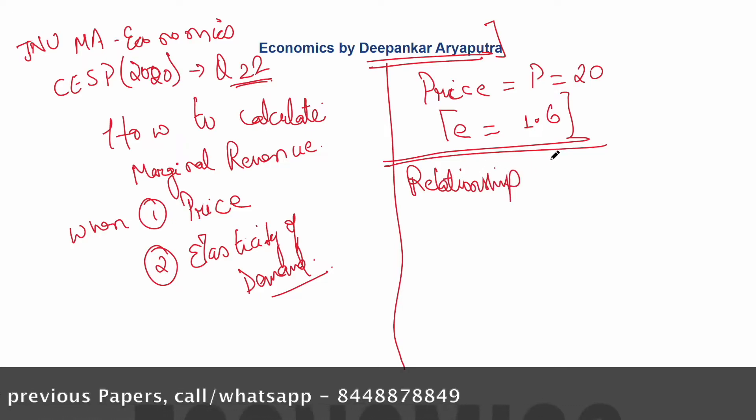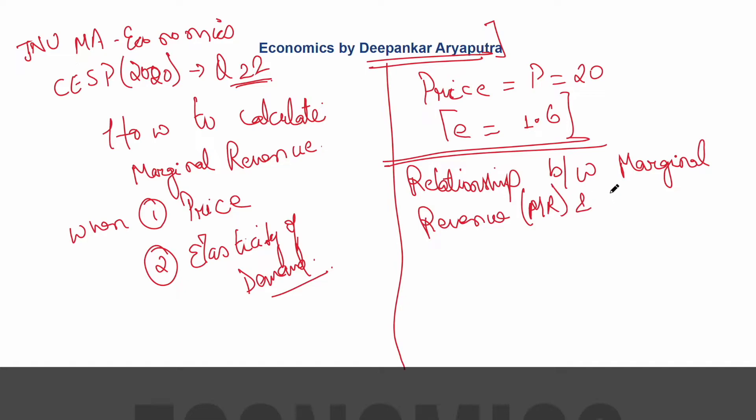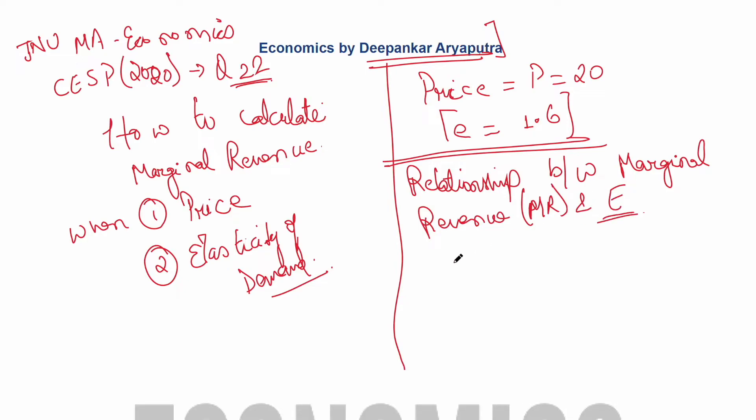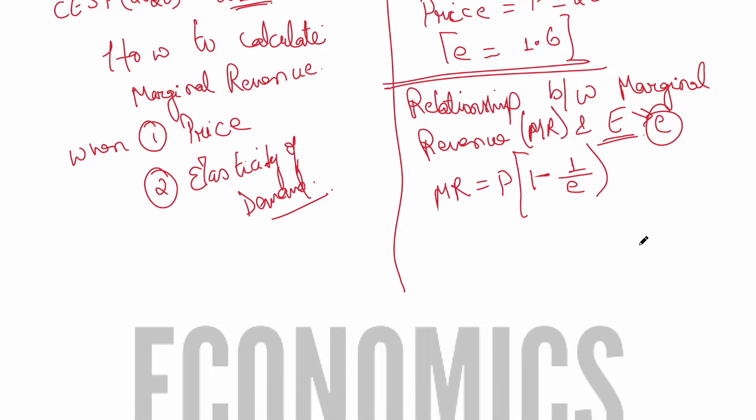Relationship between marginal revenue, MR, and E, price elasticity of demand. And this relationship says that MR equals P times 1 minus 1 by E. We represent elasticity in small e.